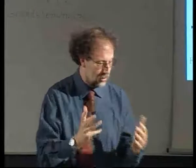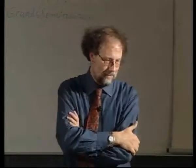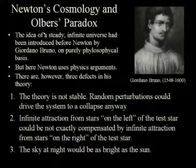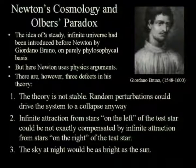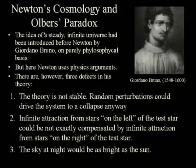The only solution Newton was able to find was to hypothesize that the universe is infinite, so that the net force on a given star is basically zero — the same force from all stars on the left would compensate the force from all stars on the right, and the star would not move. The idea of a steady infinite universe was already introduced by Giordano Bruno, but that was philosophy. Newton was using physics, so there is a big difference.